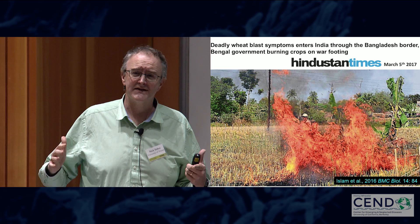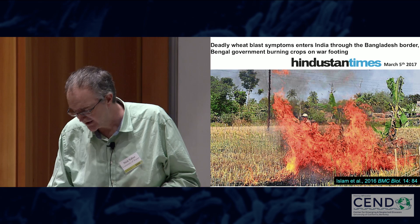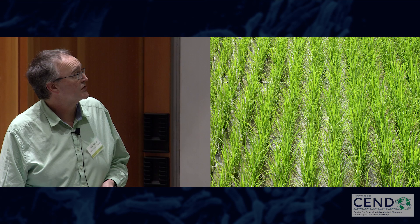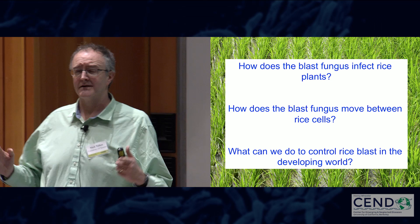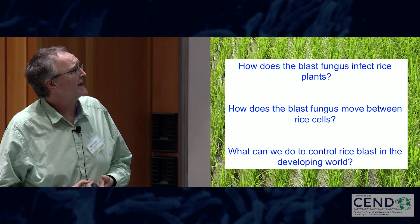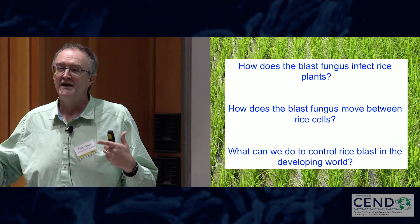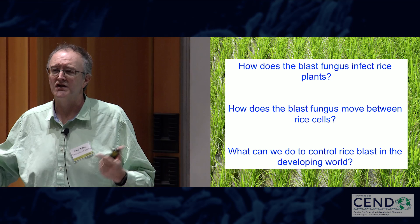What I'm going to do is tell you about what we're trying to do to make sure our rice looks healthy rather than in its diseased state. I'm going to tell you about three different things today: first, how the blast fungus actually infects rice plants at the very early stages; then some new work about how the blast fungus is able to move between rice cells, including manipulation of plasmodesmata; and finally, some of our applied work to control rice blast in the developing world.